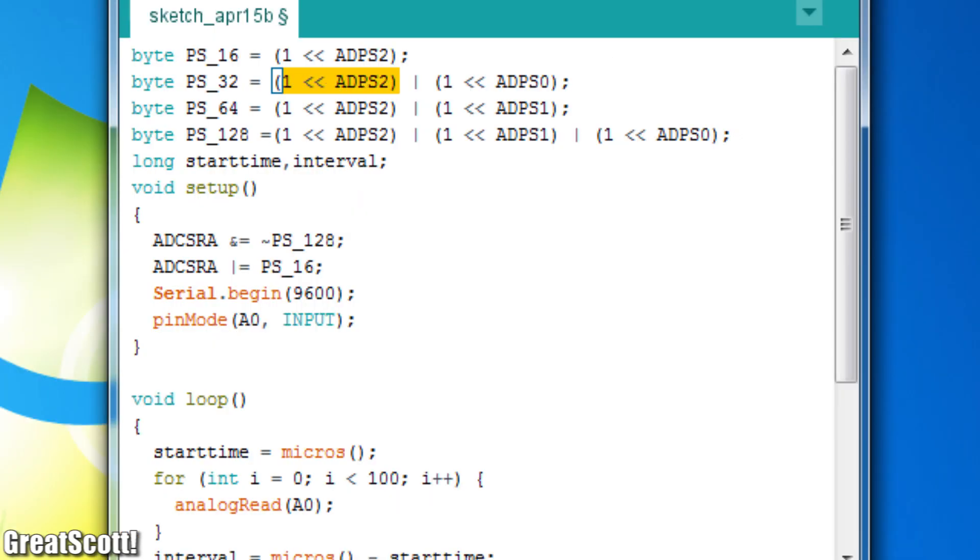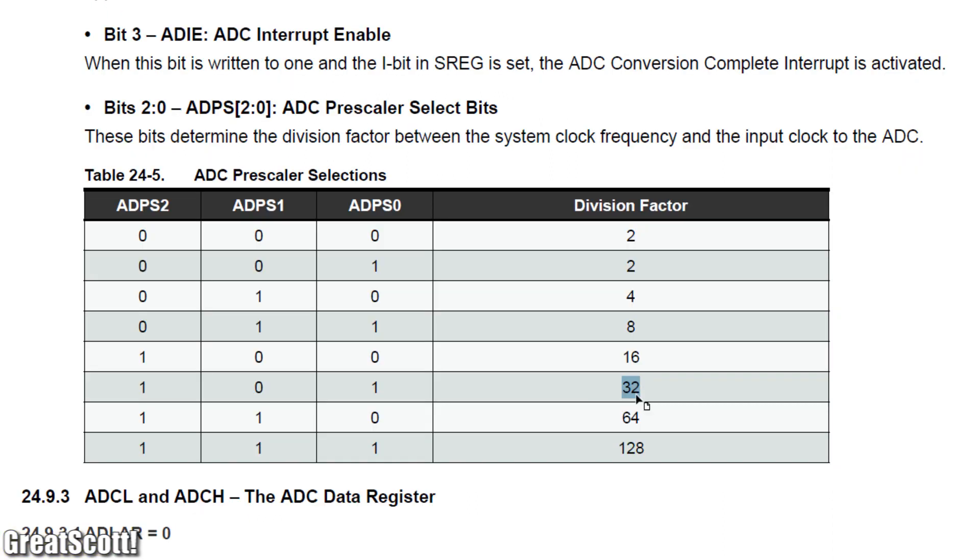The other prescaler bytes also set this bit to 1, but additionally set a second or third bit to 1 as well to reach the targeted prescaler.